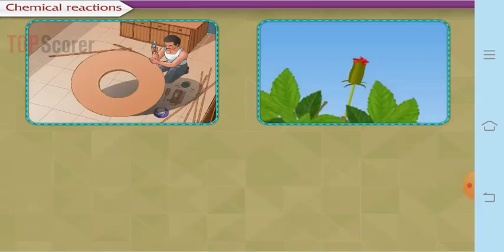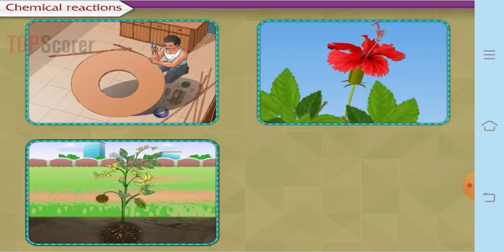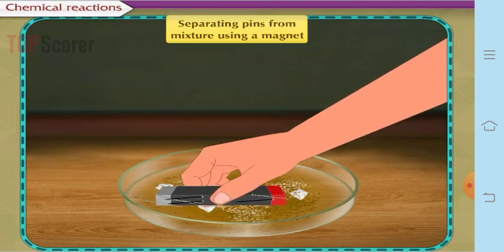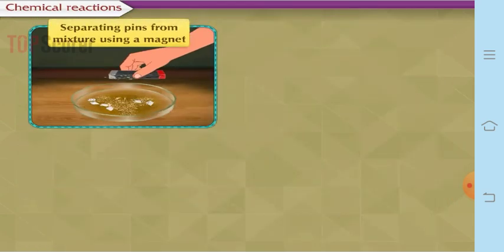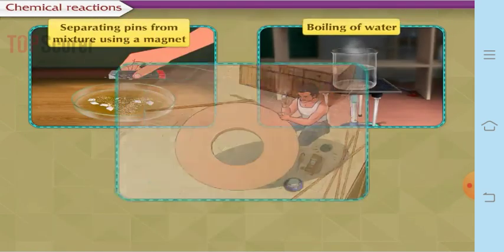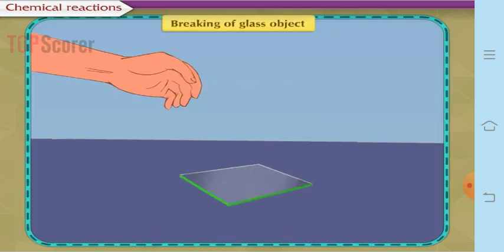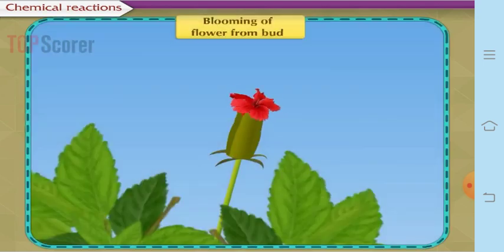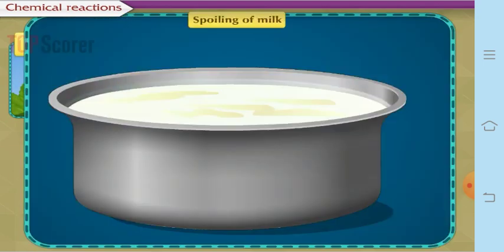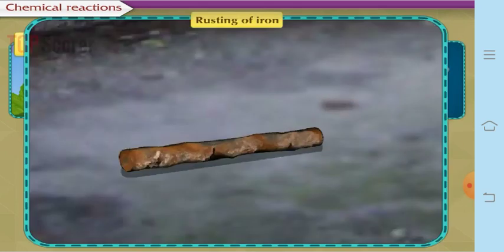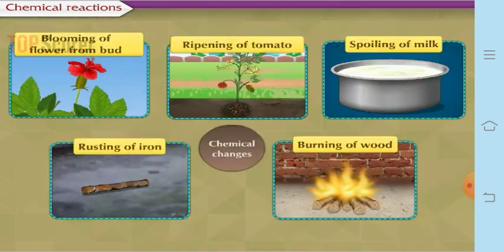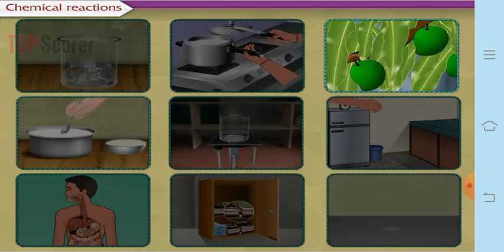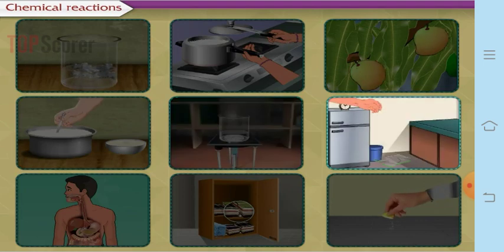Let us see some examples to identify physical and chemical changes. Separating beans using a magnet, boiling of water, making a table from wood, and breaking of glass are physical changes. Whereas blooming of a flower, ripening of a tomato, spoiling of milk, rusting of iron, and burning of wood are all chemical changes.